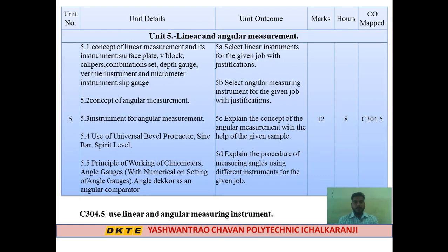Unit 5 is Linear and Angular Measurement. For linear measurement, topic 5.1 covers the concept of linear measurement and its instruments. Many instruments are available, including surface plate, V-block, calipers, combination sets, depth gauge, vernier instruments, micrometer instruments, and slip gauges.